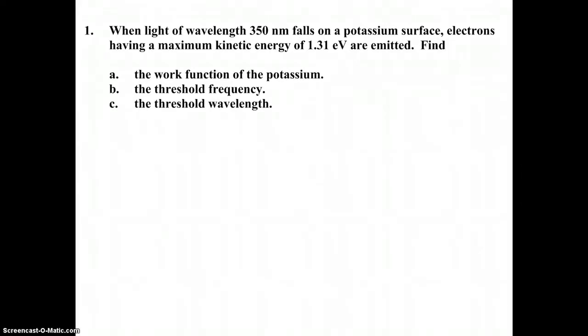Let's jump right in and get started with number 1, highlighting important information as we go. When light of wavelength 350 nanometers, so that's lambda, falls on a potassium surface, electrons having a maximum kinetic energy of 1.31 electron volts, so that would be kmax, are emitted.